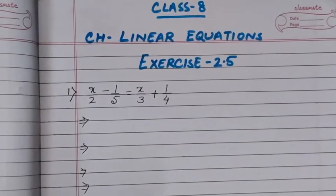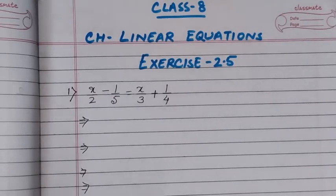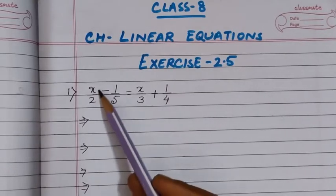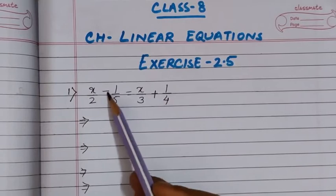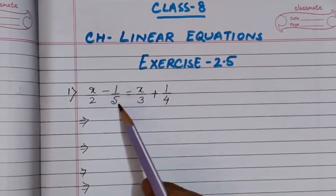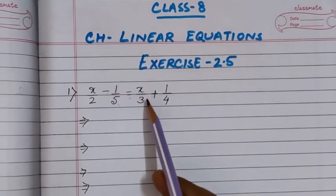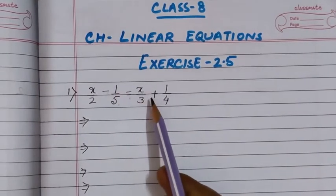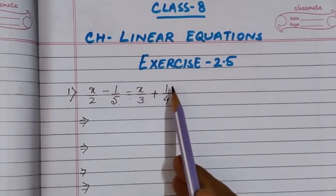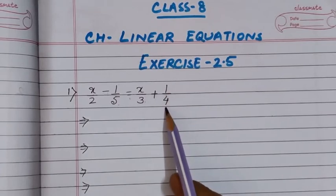Namaste, my students. Today we will do exercise 2.5 of the chapter linear equations. In question number 1, we have x by 2 minus 1 by 5 is equal to x by 3 plus 1 by 4.